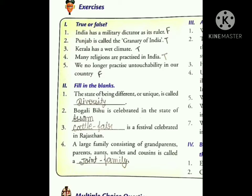Now the fifth number is: we no longer practice untouchability in our country? False, we are still practicing untouchability in our society and in our country. Now come to the fill in the blanks. The first is: the state of being different or unique is called diversity.